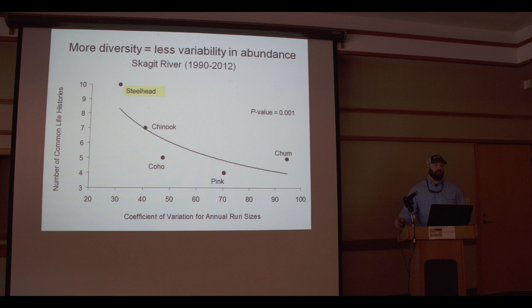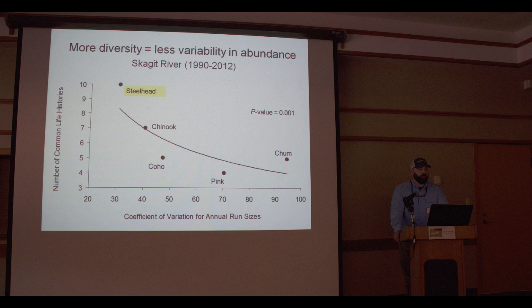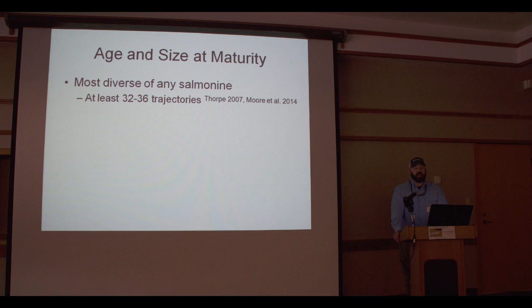Is there something underlying all that variability in abundance? Yes — it is life history diversity. On the bottom x-axis I compared the coefficient of variation for annual run sizes — essentially a measure of variability — against the number of common life histories, and regressed those two using simple linear regression. It was a very significant value, and this model explained amazingly over 75% of the variability in annual run size. The more life histories you have in the Skagit River, the less variation in annual abundance.